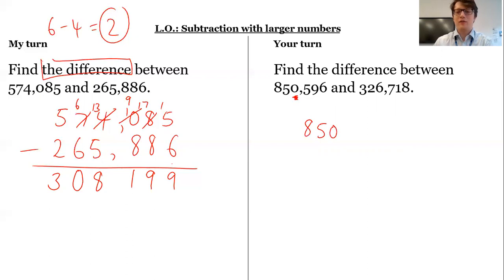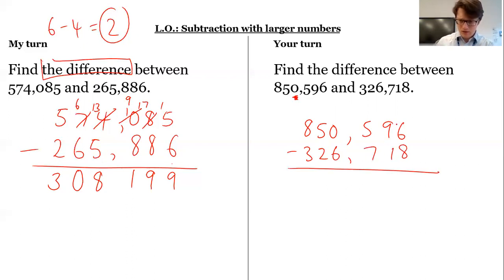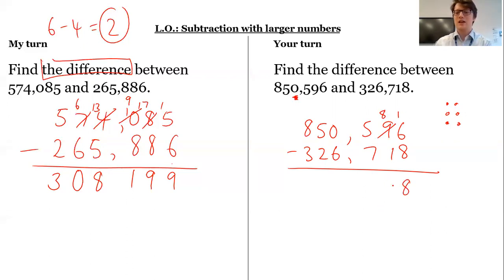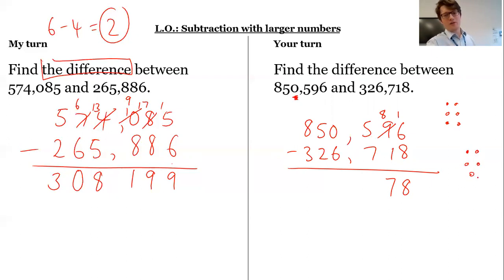So we've got 850,596 subtract 326,718. I can't do 6 subtract 8 because I've got 6 ones and I'm trying to get rid of 8, so I need some more ones — regroup 1 ten into 10 ones. 16 subtract 8 is 8. 8 subtract 1 is 7. 5 subtract 7 — well, I can't do that. I've got 5 hundreds and I'm trying to get rid of 7, so I need more hundreds. I go to my thousands, but there are no thousands.